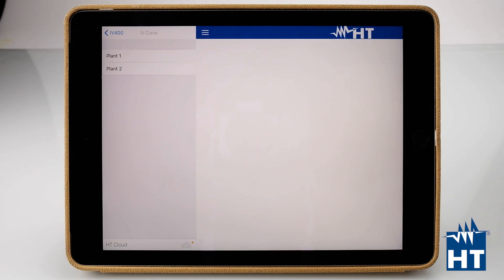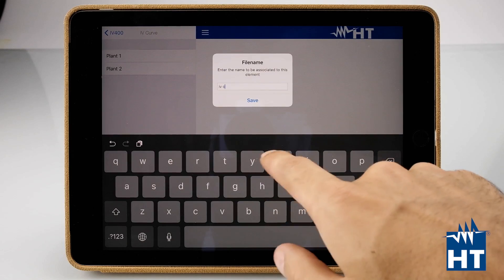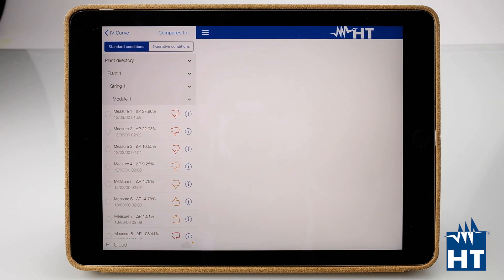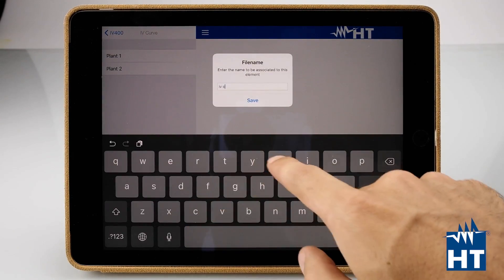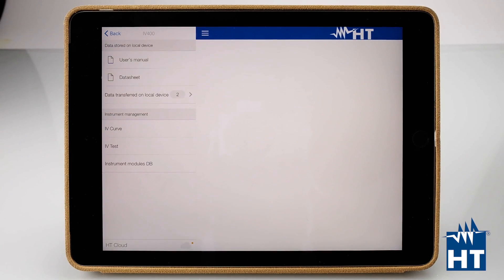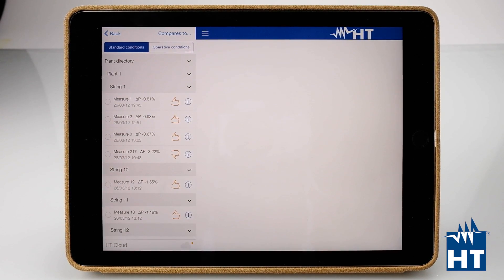Let's download some measurements. We have PLANT1 and PLANT2 that we already gave a name on the IV400W before. So PLANT1, now the curve is downloading. We can give a name, IV curve 1, save. Here we have everything about this measurement campaign. Then let's download the second one, IV curve 2. Now we can come back on the curves and here we have the PLANT1 that we downloaded before.